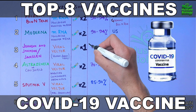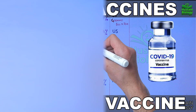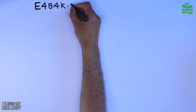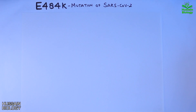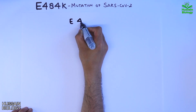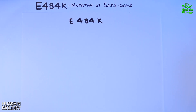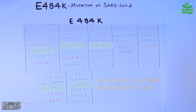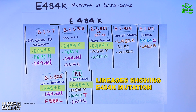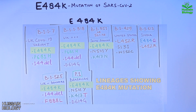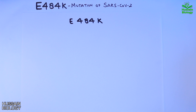In the previous video we discussed the top 8 vaccines for COVID-19 — the link is in the description. In this video we'll be discussing the E484K mutation in SARS-CoV-2. This mutation is present in most of the variants of SARS-CoV-2, as shown in this table of variants of concern.